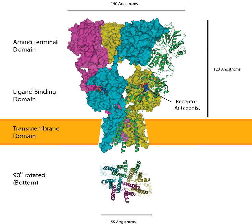AMPAR subunits differ most in their C-terminal sequence, which determines their interactions with scaffolding proteins. All AMPARs contain PDZ-binding domains, but which PDZ domain they bind to differs. For example, GluA-1 binds to SAP-97 through SAP-97's class 1 PDZ domain, while GluA-2 binds to PICK1 and GRIP-ABP. Of note, AMPARs cannot directly bind to the common synaptic protein PSD-95 owing to incompatible PDZ domains.